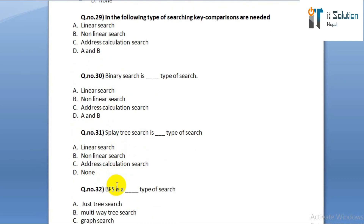Question number thirty-one: splay tree search is which type of search? Option A: linear search. Option B: non-linear search. Option C: address calculation search. Option D: none.